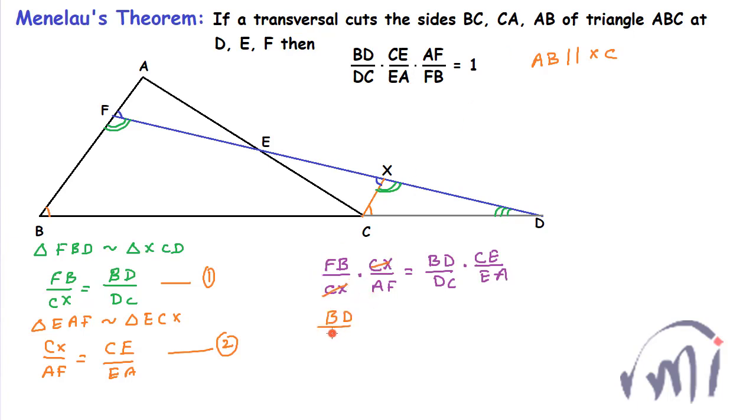And here this CX will cancel this CX, and we'll get BD divided by DC multiplied by CE divided by EA multiplied by AF divided by FB is equal to 1.